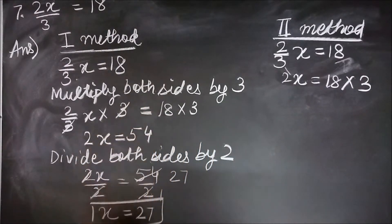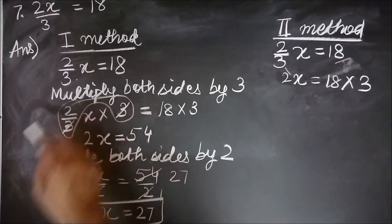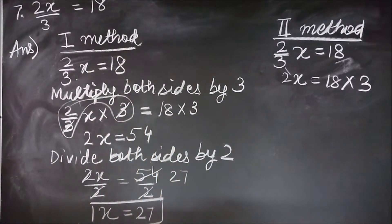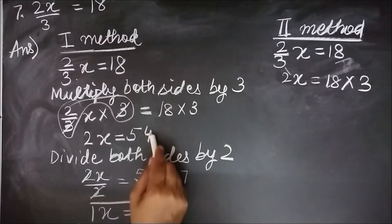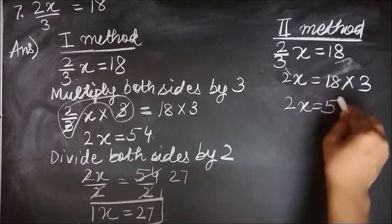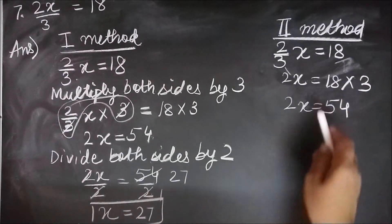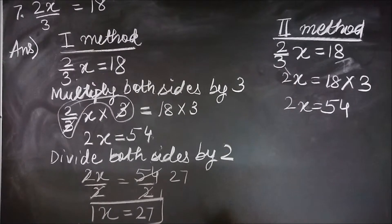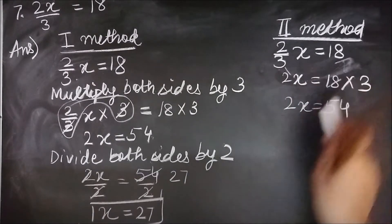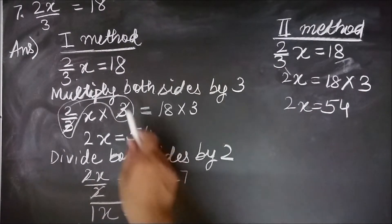We did the same here, just that in this case we skipped this part and straight away jumped here. 2x equal to 54. So you know now why a number when it is getting divided on one side and when it is moved to the other side, it gets into multiplication. This is the reason.